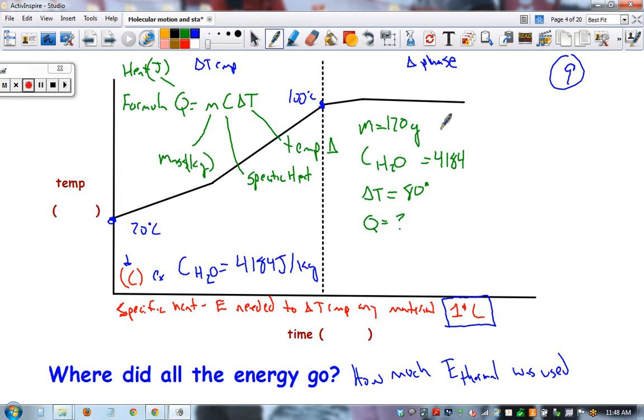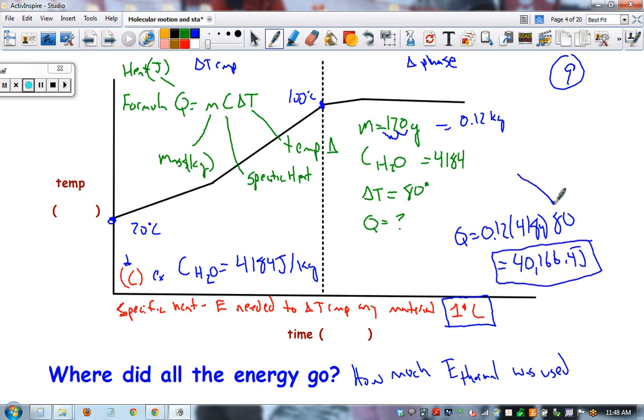Solve for Q. First thing we need to do is change this to kilograms: 0.12 kilograms. Set up our formula: 0.12 times 4184 times 80 equals 40,166.4 joules. It's a positive number because we increased 80 degrees, so we added that many joules to the water to heat it up. That's the first part.